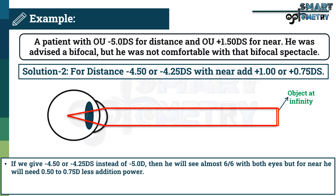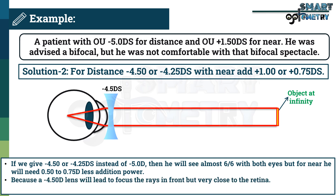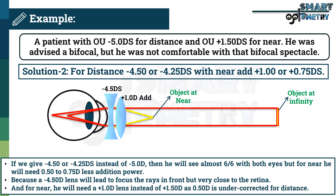In the second technique, if we give −4.50 or −4.25 instead of −5.00, then the patient will see almost 6/6 with both eyes. But for near, he will need +0.50 or +0.75 addition power. Because a −4.50 diopter lens focuses rays slightly in front of the retina, and for near he will need a +1.00 diopter lens instead of +1.50 diopters, as 0.50 diopters is under-corrected for distance. Thus, an addition power of +0.75 or +1.00 instead of +1.50 may easily be accepted by him in a bifocal spectacle.